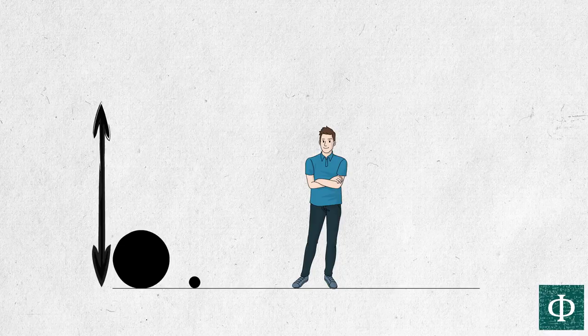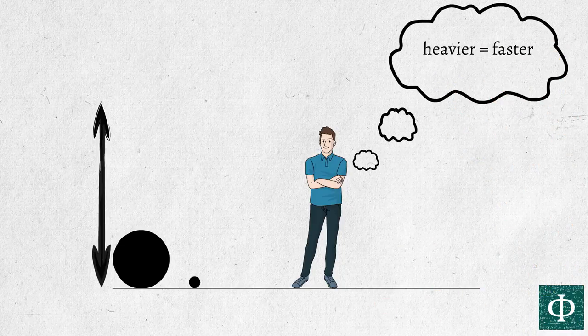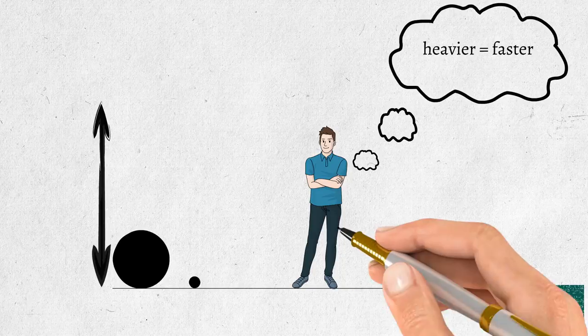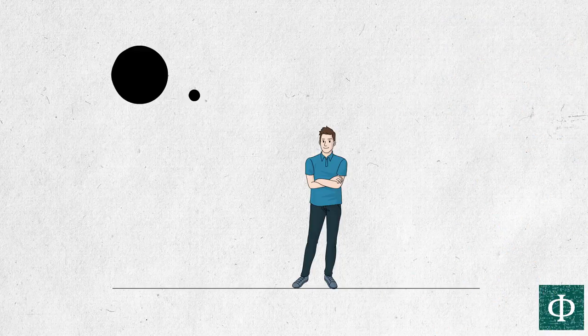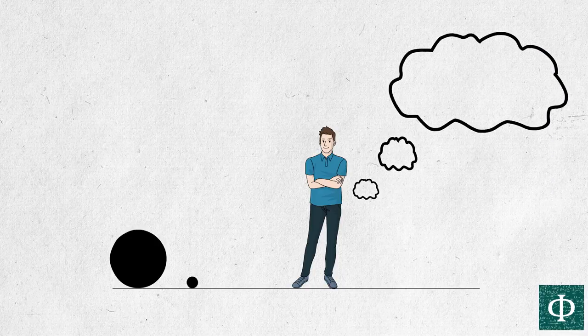Well, your first intuition might be that the heavier object will hit the ground first, since it's heavier it will fall faster, right? Well actually no, it turns out that both objects will hit the ground at the exact same time.